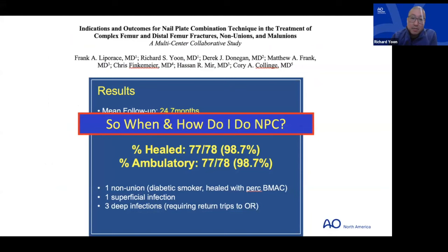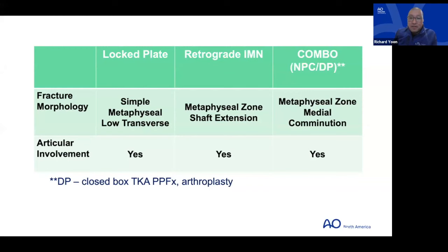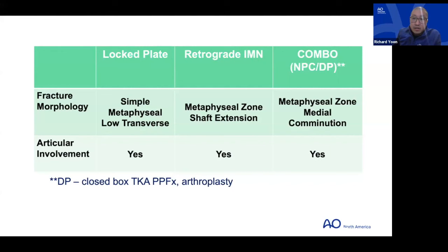My overall philosophy: if fracture morphology is a simple metaphyseal or low transverse pattern, a lock plate alone is appropriate — I typically save this for younger patients. If I can slide a minimally invasive plate up without much complexity, I'll do that. I still tend to nail more than plate — probably 80 to 85 percent nailing versus plating. For any metaphyseal zone or shaft extension in the middle-distal half, even with articular involvement, that gets a retrograde nail.